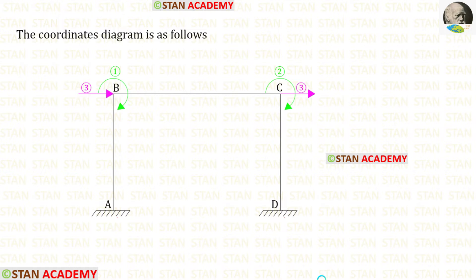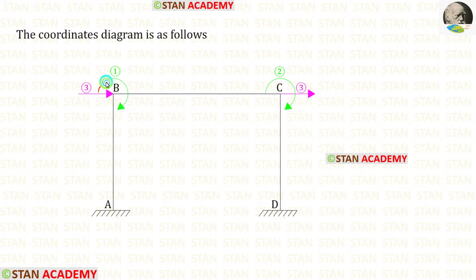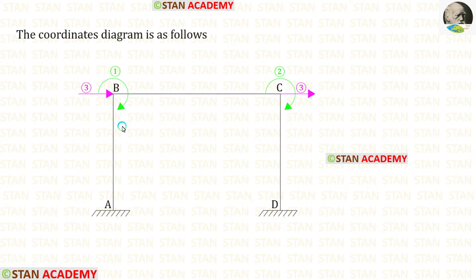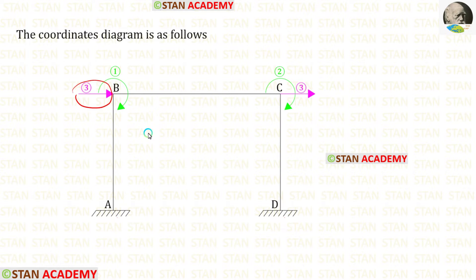Now let us make the coordinates diagram. We know that at points B and C we have slope, so let us keep the first coordinate at point B and the second coordinate at point C. Since the displacement is slope, the coordinates represent the moments, and they should be placed in the clockwise direction. The third coordinate is the sway. Since the sway occurs towards the right side, we keep the coordinate towards the right side. The coordinates represent the horizontal reactions at points B and C, but both should be taken as only one coordinate.